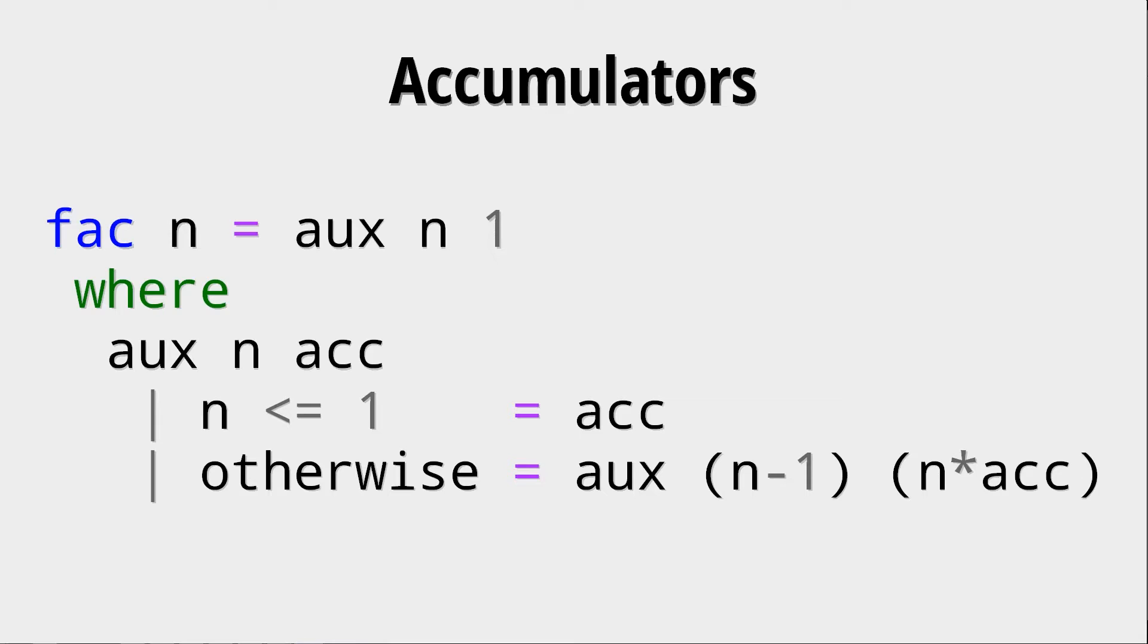Another way of implementing recursive functions is with accumulators. Now in this case we say that the faculty function is the result of an auxiliary function aux. This auxiliary function takes another argument called ACC which is our accumulator.